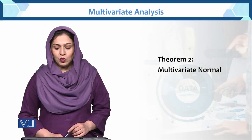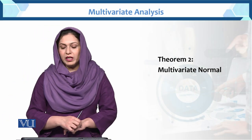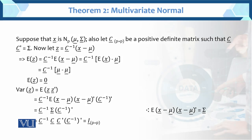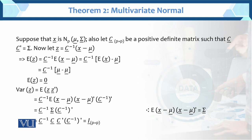Here, Theorem 2: the Multivariate Normal. What is Theorem 2? Suppose x follows the multivariate normal distribution with mean vector mu and variance-covariance matrix sigma.